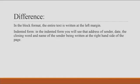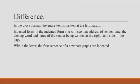Let us quickly summarize the differences. In the block form, the entire text is written at the left margin. In the indented form, the sender's address, date, closing word, and the sender's name are written on the right-hand side of the page. Also, when you start a new paragraph in the indented form, it is again indented.